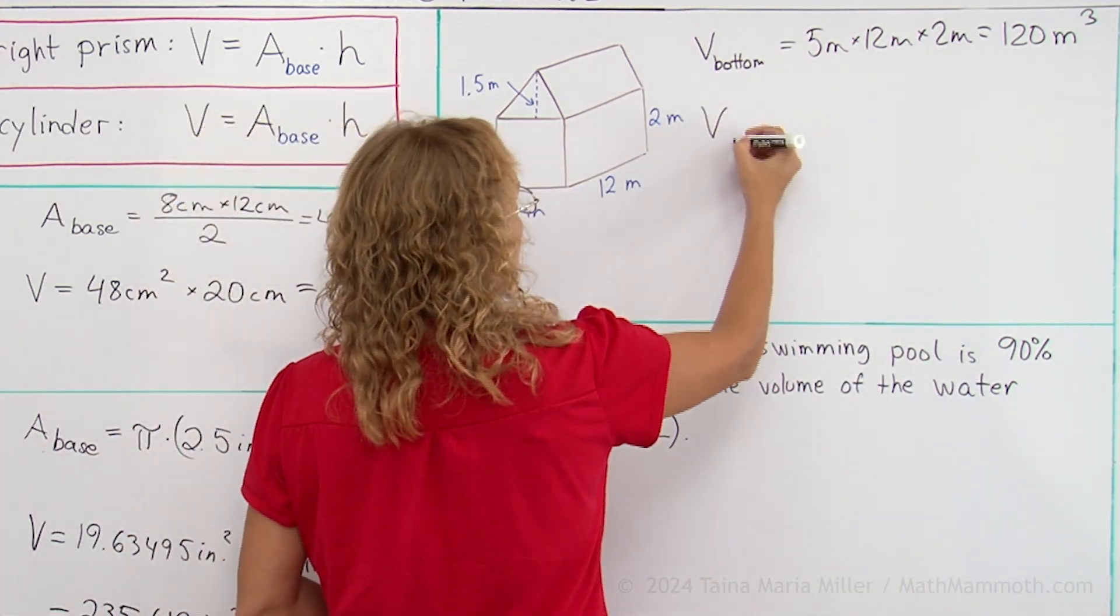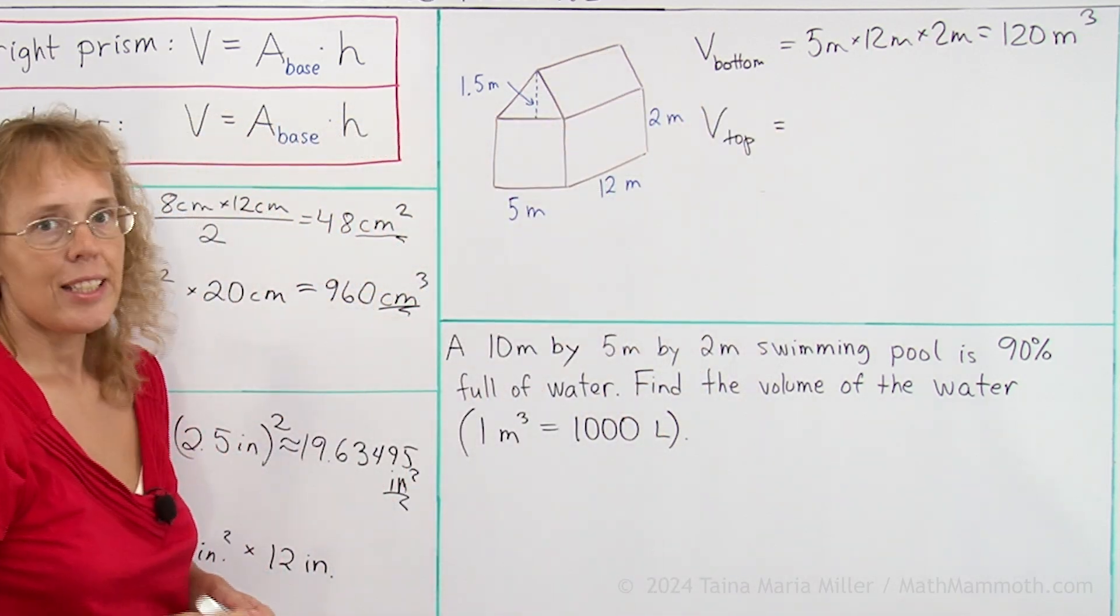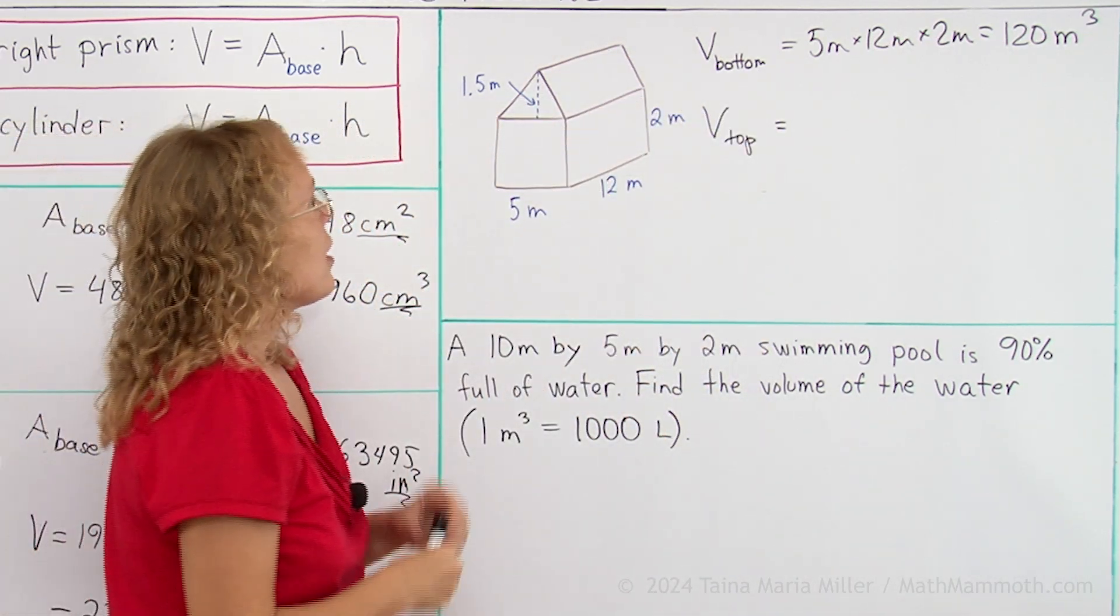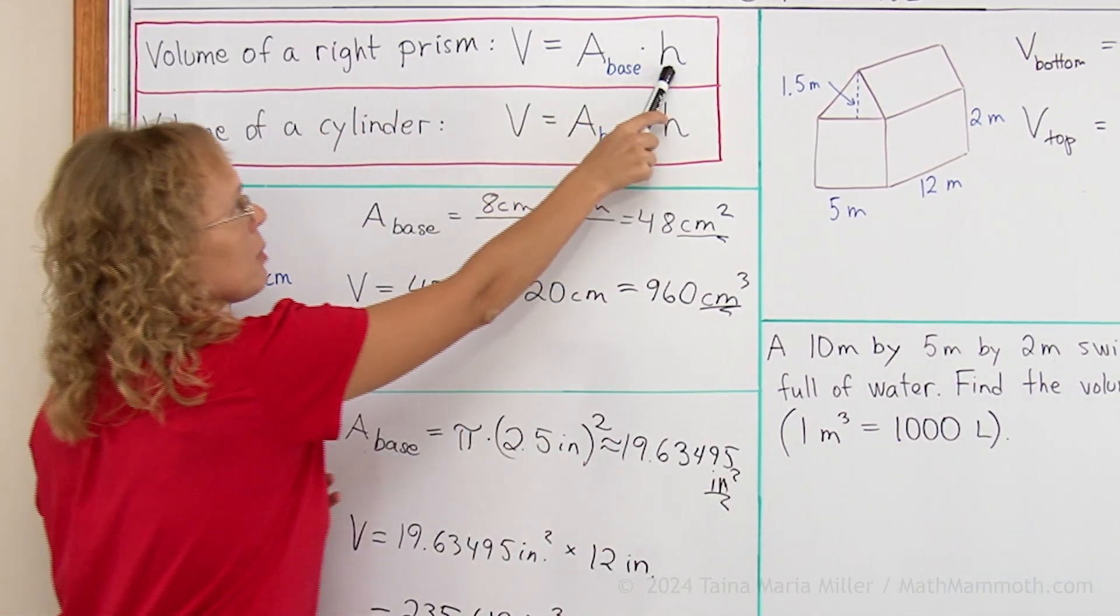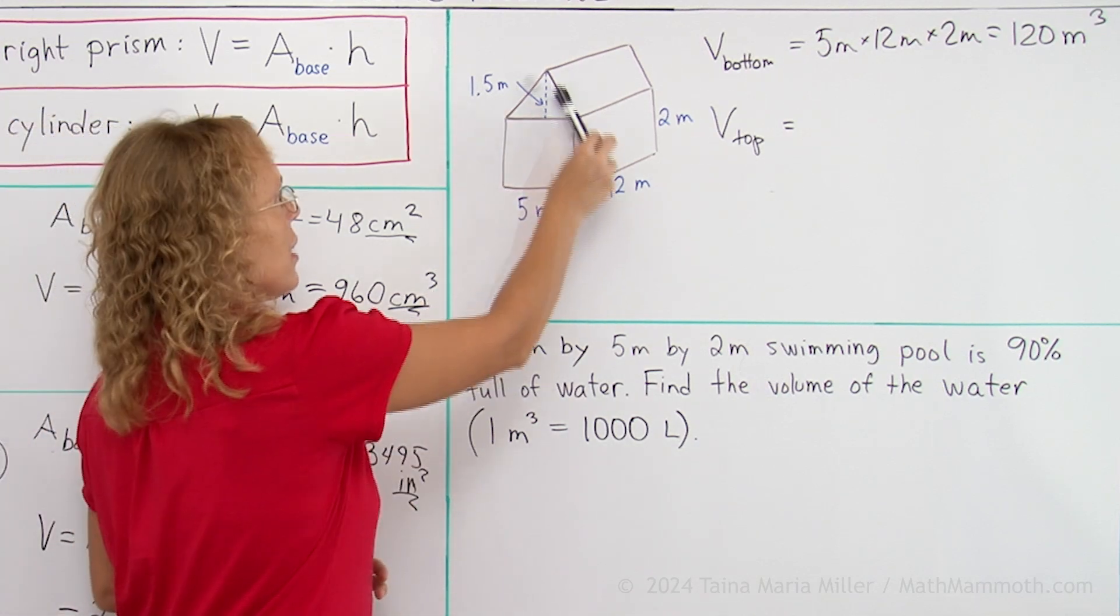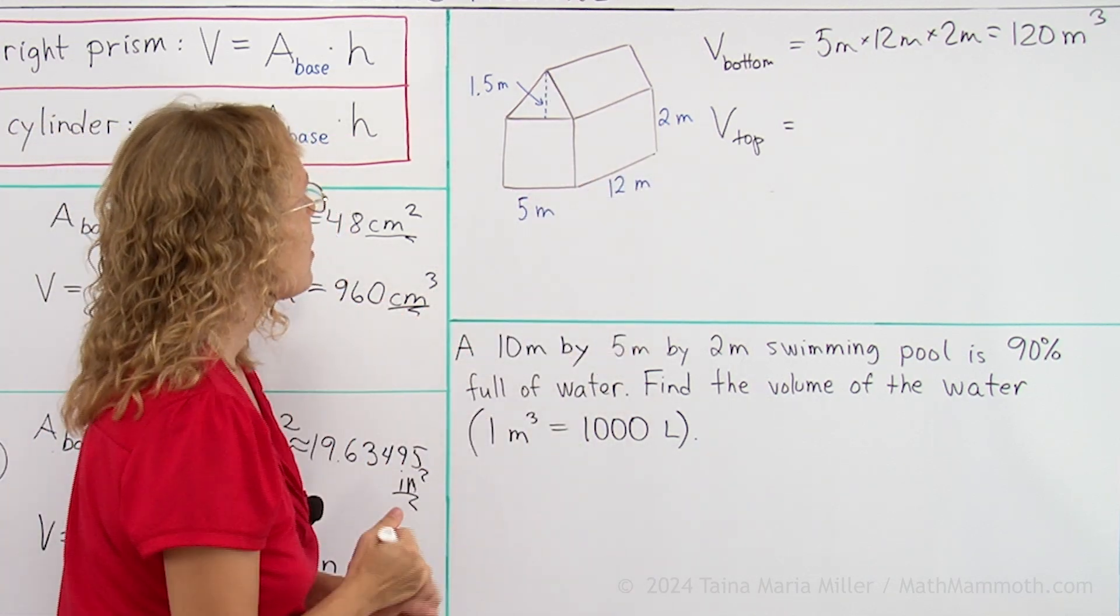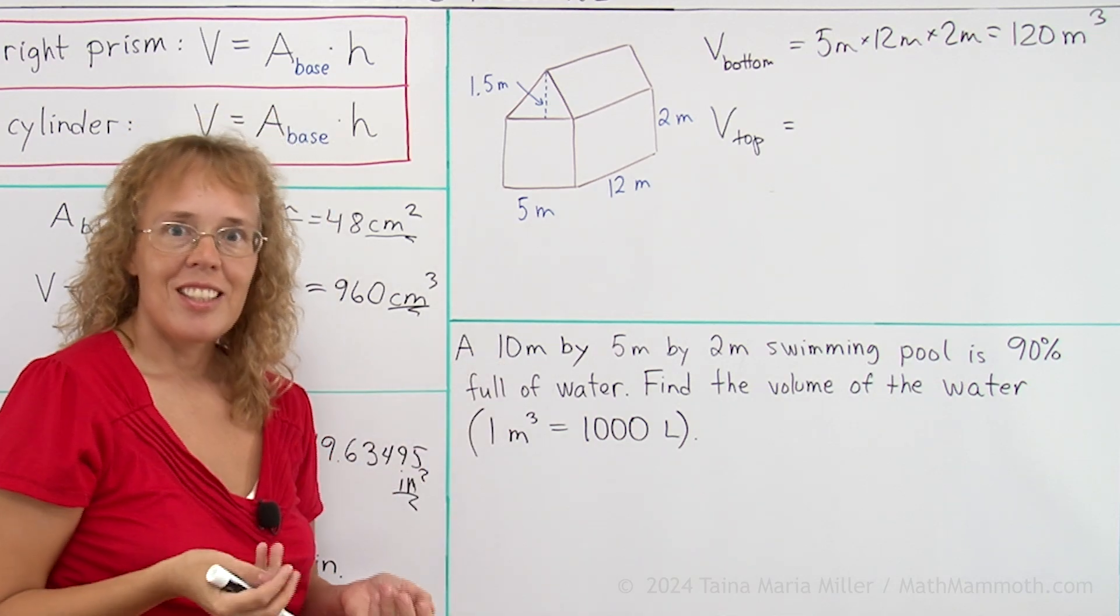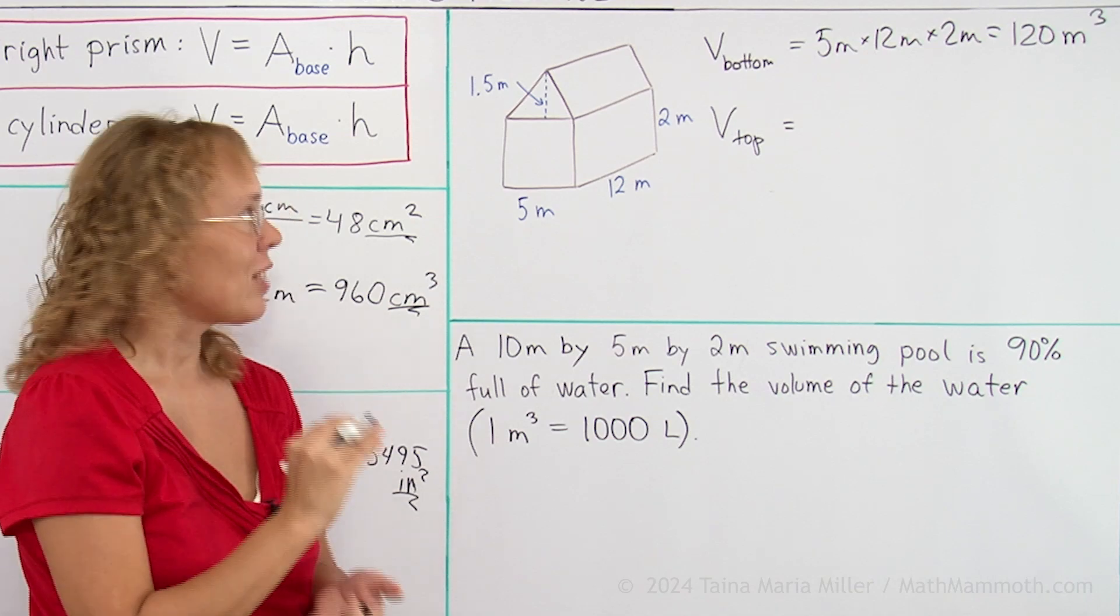Then the volume of the top, or the roof part here, this one, the attic. That is a prism, so we need to calculate the area of the base times height. The base is a triangle, and then the height here, this way, would be 12 meters. And the area of the triangle is, again, base times height of the triangle divided by 2.